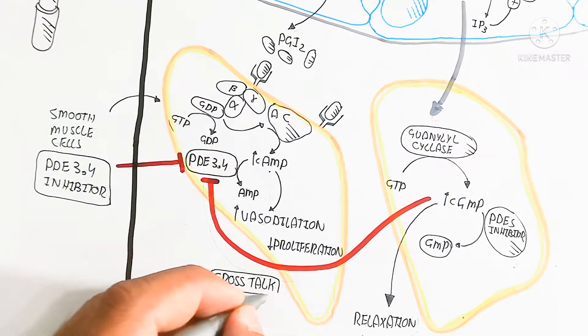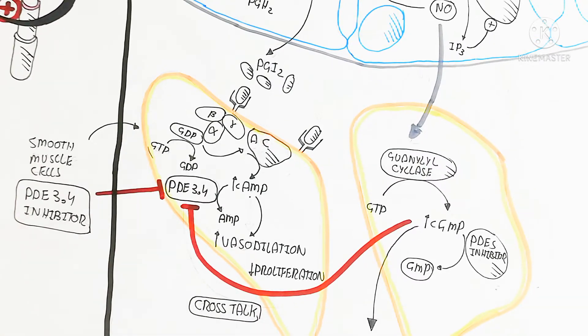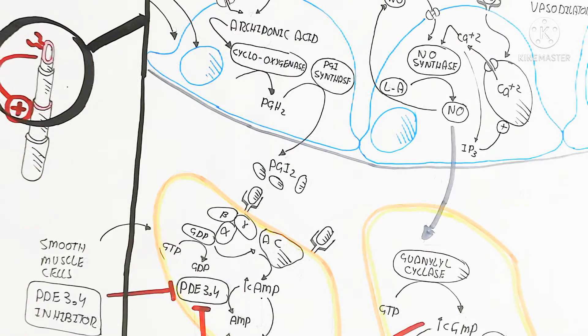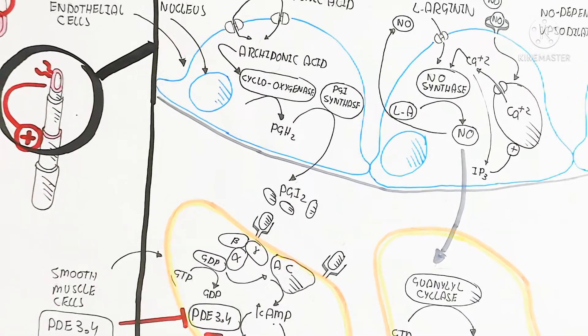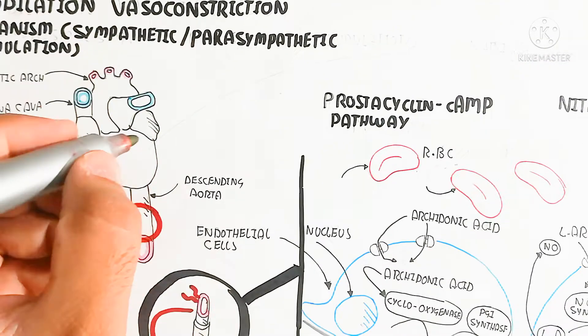When PDE3/4 is activated, cyclic GMP is degraded and its inhibition stimulates vasodilation; otherwise, vasoconstriction occurs.